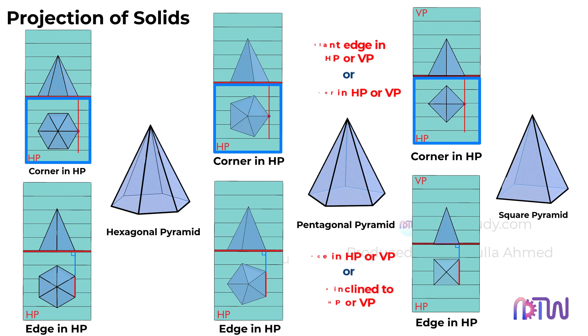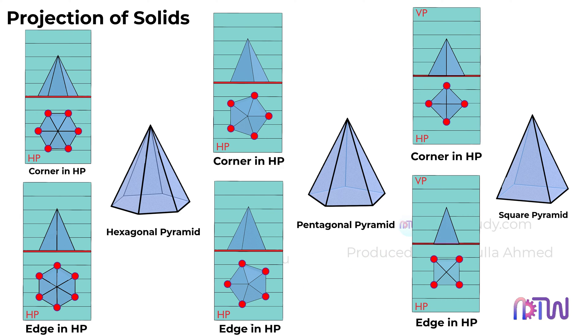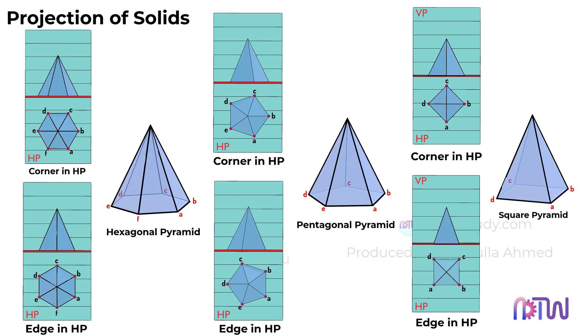Apart from this, we can see that these corners will represent A, B, C, D, and the center will be labeled as OP, which will be the axis of the pyramid.